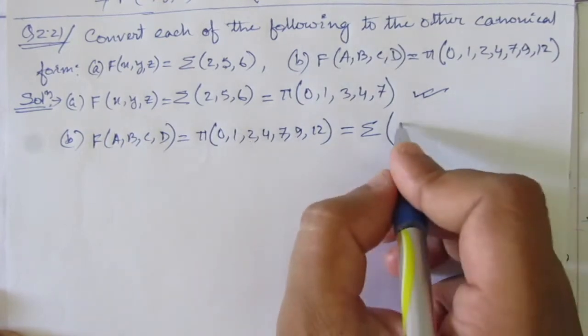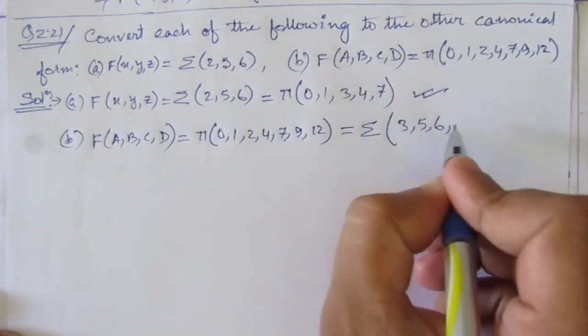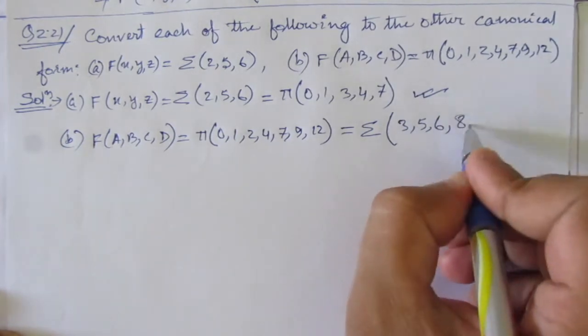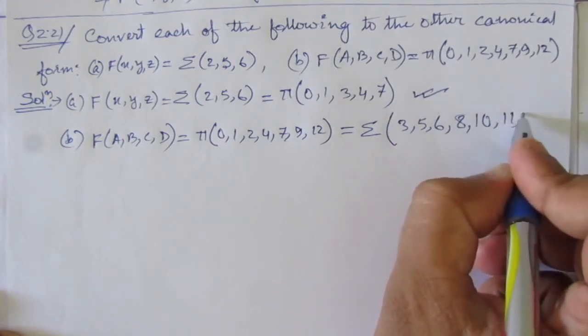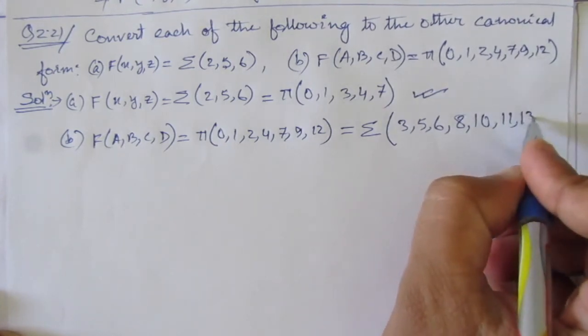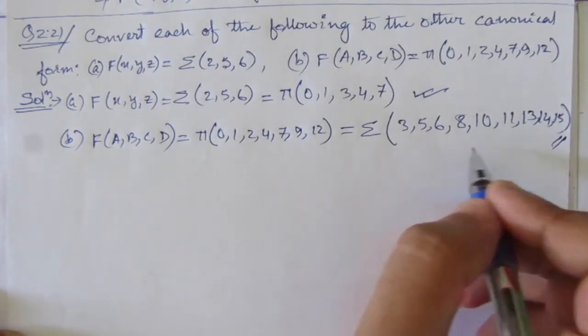0, 1, 2, then 3; 4 is present, so 5, 6; and 7 is present; 8; 9 is present, so 10, 11; 12 is present, so 13, 14, and 15. This is the sum of minterm expression.